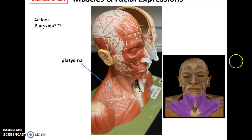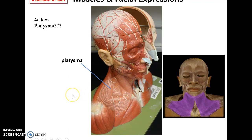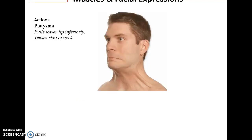We also have this thin sheet muscle going from the clavicle and scapula area and inserting into the skin of the face, called the platysma. The platysma helps to pull down the lower lip as well as tense the skin of the neck. And that is it for this part.